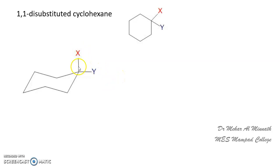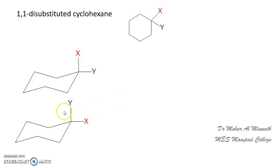Here x is in the axial position and y occupies the equatorial position. We can have the other possibility also, that is y in the axial position and x in the equatorial position. Now when we flip this, we have to decide which one occupies the equatorial or axial position — whether it is x or y — and which is energetically more stable.